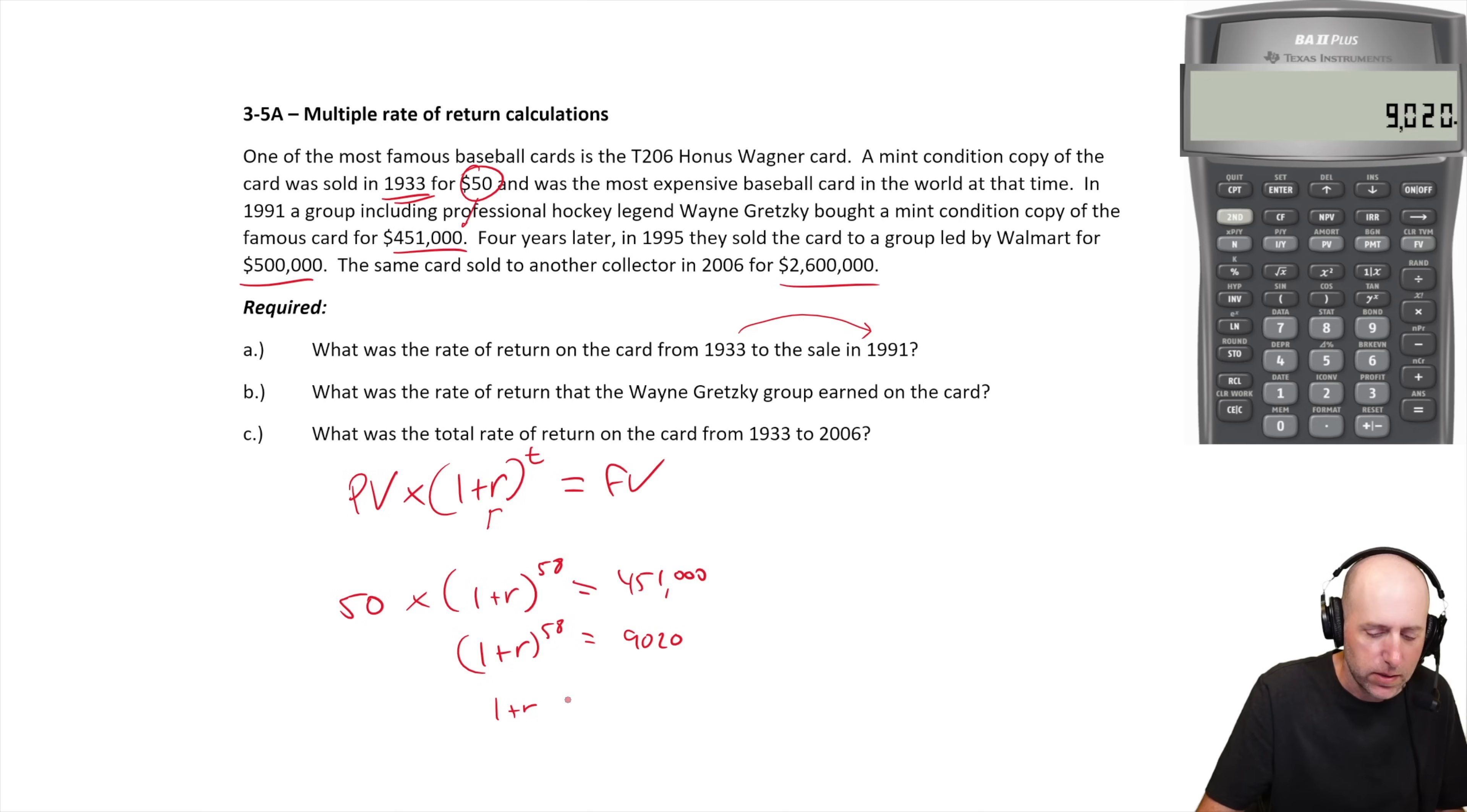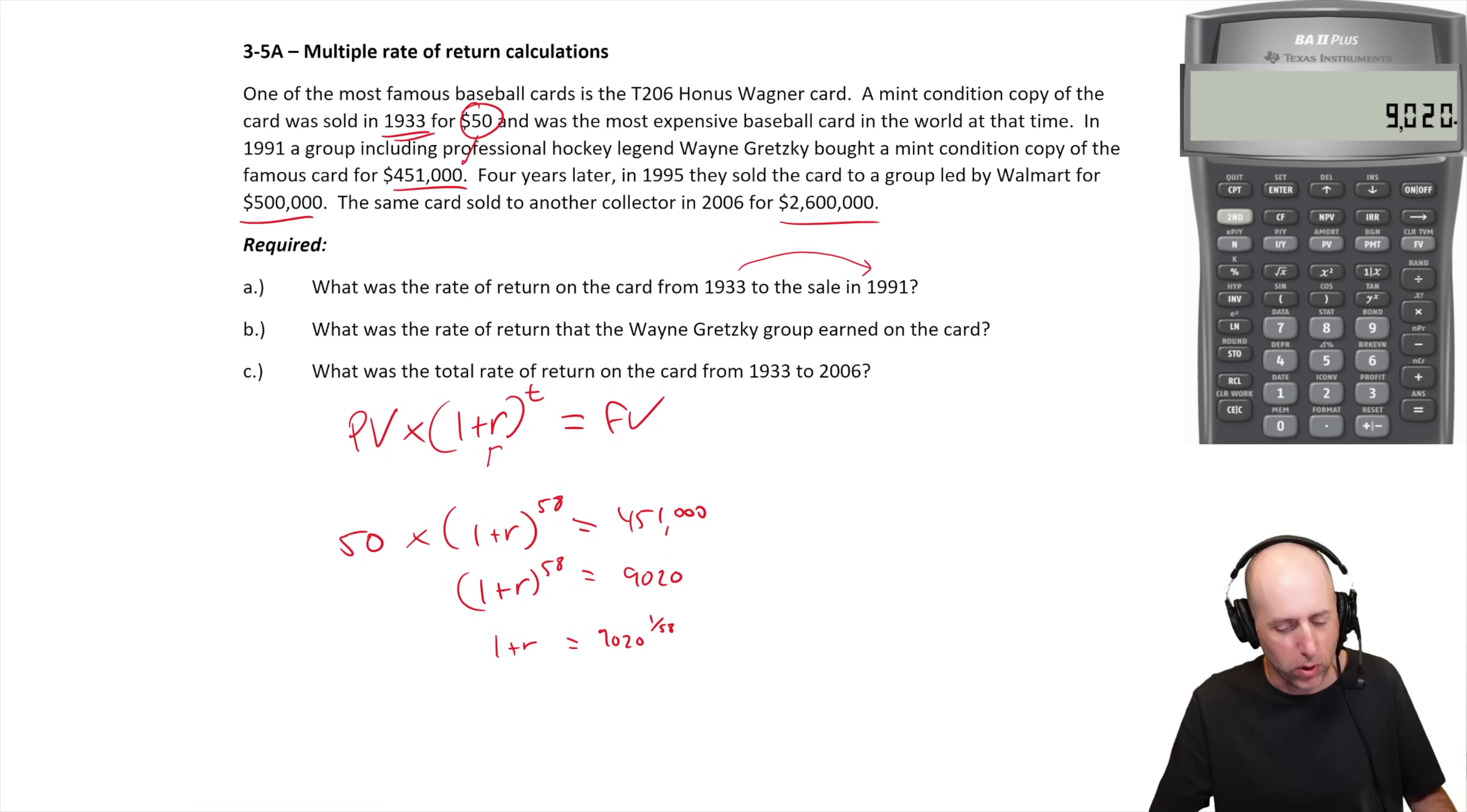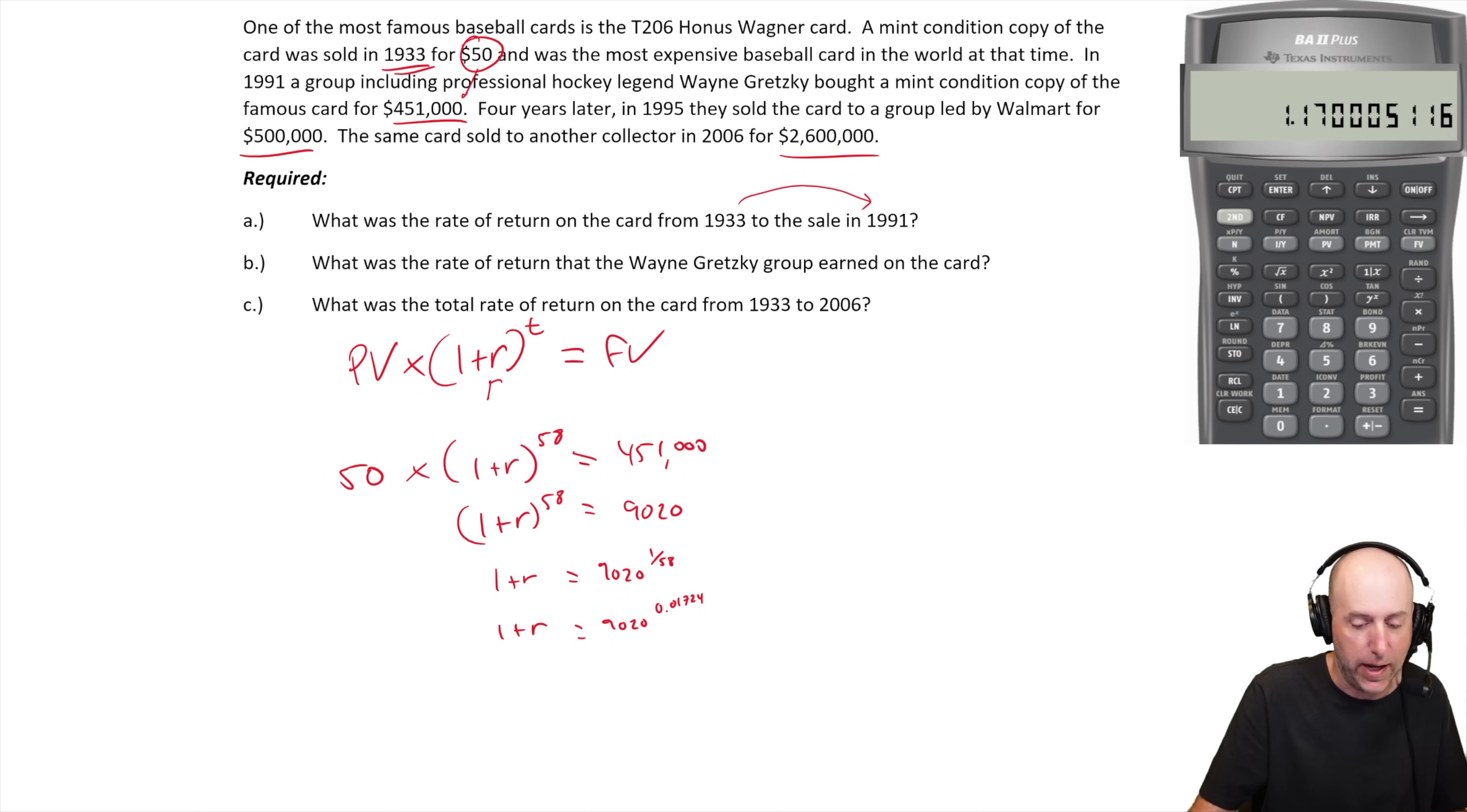One plus r to the 58 equals 9020. We have to raise these to the power of one over 58 - we have to take the 58th root to get rid of this exponent. 1 divided by 58 as a decimal is 0.01724. So I get 9020 to the power of 0.01724 equals 1 plus r. That equals 1.17, almost exactly.